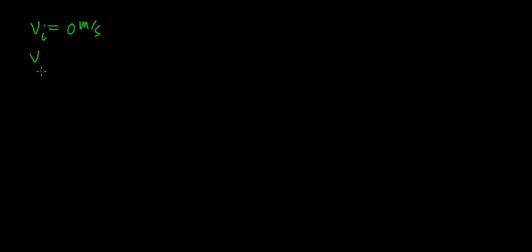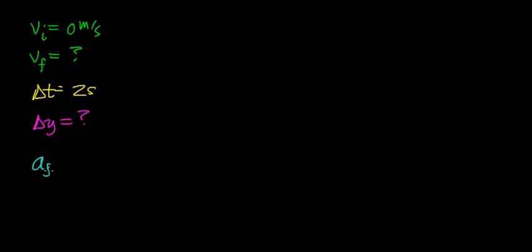Let's first summarize everything that we know and then figure out how we apply the kinematic equations to this problem. The initial velocity of this object is going to be zero meters per second, and then it's going to accelerate until it reaches some final velocity which we don't know. We do know that it will take two seconds between the time you release it and it hitting the water. We don't know the height of the cliff, but that is what we're trying to calculate. We do know the acceleration due to gravity is 9.8 meters per second squared.